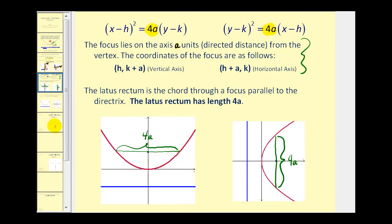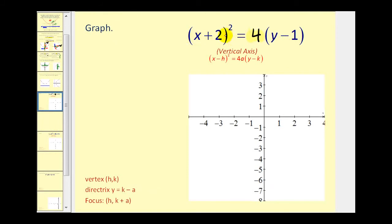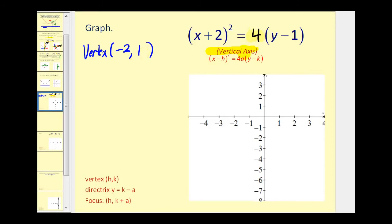Let's look at a couple of examples. The first thing we notice is the x part is being squared, so we're going to have a vertical axis. We can determine the vertex by inspection — remember, the vertex has coordinates (h, k). If we see (x + 2), the x-coordinate is negative 2, and if we see (y − 1), the y-coordinate is positive 1, giving vertex (−2, 1). Next, 4a equals 4, so a equals 1.